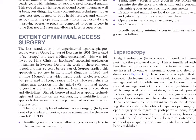The first introduction of an experimental laparoscopic procedure was by George Kelling of Dresden in 1901, who termed it celioscopy and used a cystoscope. This was followed by Hans Christian Jacobi's successful application in humans in Sweden. Despite the work of these pioneers, it took another 70 years before Patrick Steptoe applied this approach to patients in the United Kingdom in 1980, and Philip Moret's first video laparoscopic cholecystectomy was performed in Lyon, France in 1987. Since its mainstream adoption in the mid-1990s, minimal access surgery has crossed all traditional boundaries of specialties and disciplines.